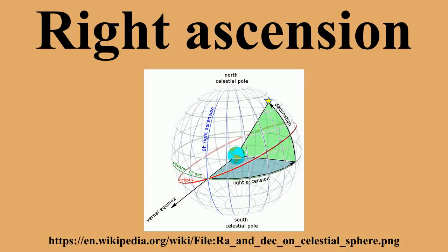Coordinates from different epochs must be mathematically rotated to match each other, or to match a standard epoch. Right ascension for fixed stars near the ecliptic and equator increases by about 3.3 seconds per year on average, or 5.5 minutes per century.